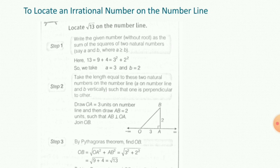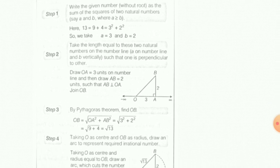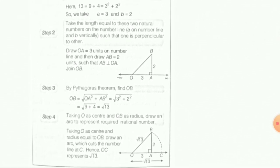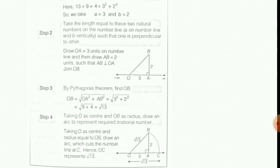Therefore, OB is equal to root 13. Now taking OB as the radius and O as the center, draw an arc which intersects the number line at point C. Therefore, OC is equal to root 13.